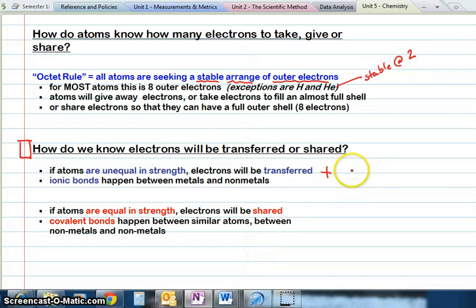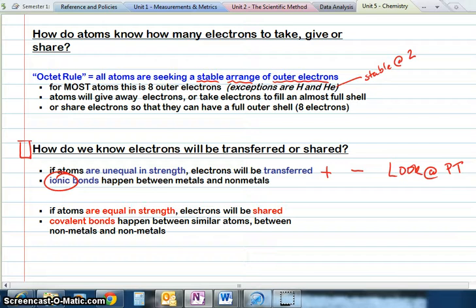That's ionic bonding where the metal will be positive and the nonmetal will be negative. If your atoms are from opposite sides of the periodic table, it's an ionic bond. If they're from the same side and equal in strength, electrons are shared.